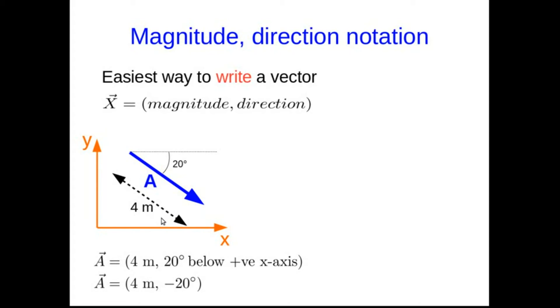There's a convention that we call the direction of the x-axis 0 degrees, and then measure angles from it with counterclockwise angles being positive. So we could adopt that convention and just write this 4 meters negative 20 degrees.